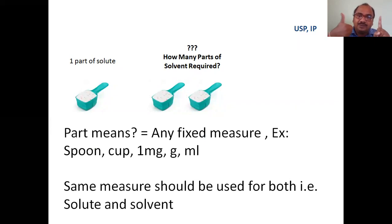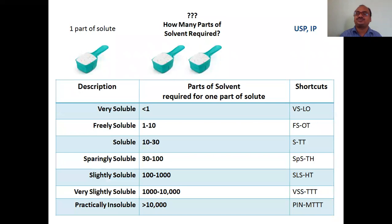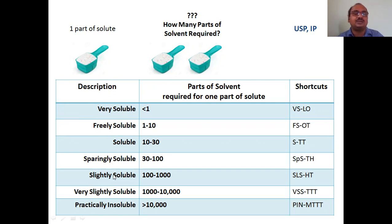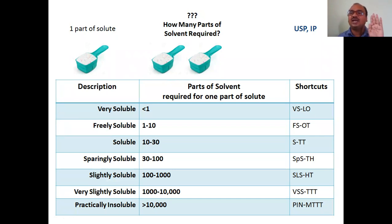In the textbook the definition is not given clearly, and students get confused. The question is: for one part of solute, how many parts of solvent are required? Based on that, USP and IP have given a standard solubility table. The descriptions in the table are: very soluble, freely soluble, soluble, sparingly soluble, slightly soluble, very slightly soluble, and practically insoluble. You have to use these descriptions exactly as given by USP/IP.